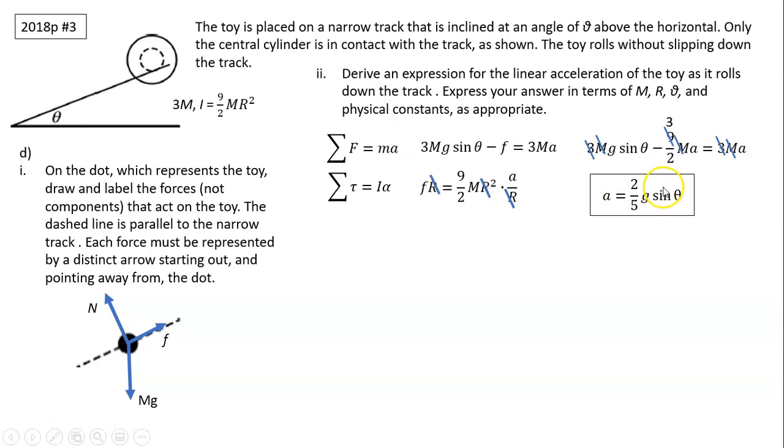Then you move it back. So A equals 2 fifths G sine theta. That is your acceleration.